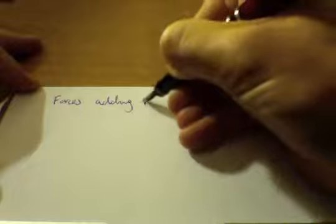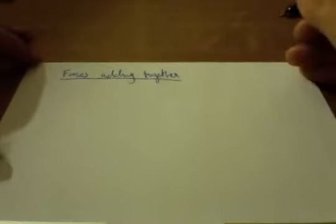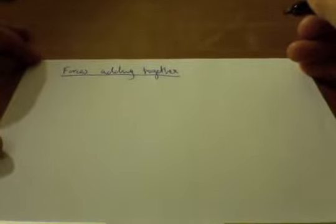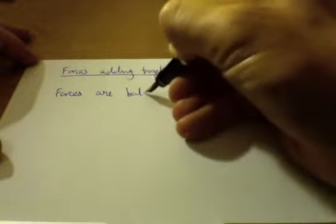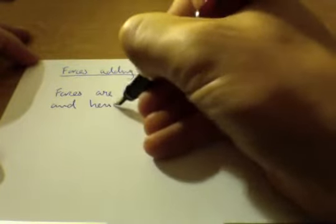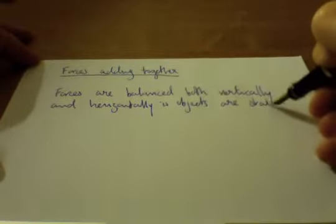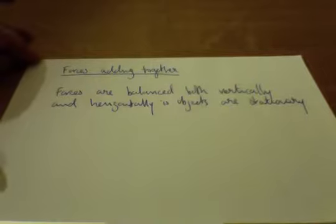Now, let's talk about how these forces add together. I think this is fairly intuitive. And actually, lots of it, we pretty much picked up on the previous bit anyway. However, we need to talk about it nonetheless. So, there's two things to bear in mind. First thing, forces are balanced both vertically and horizontally if objects are stationary.